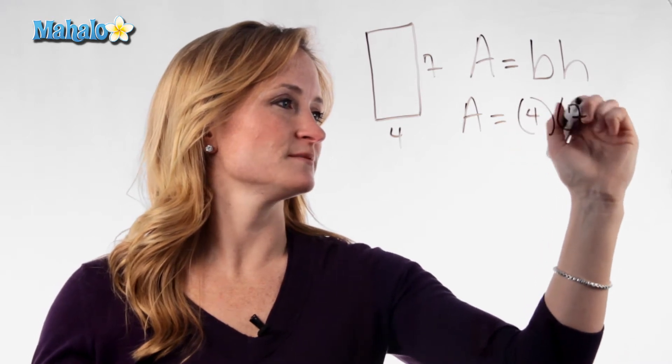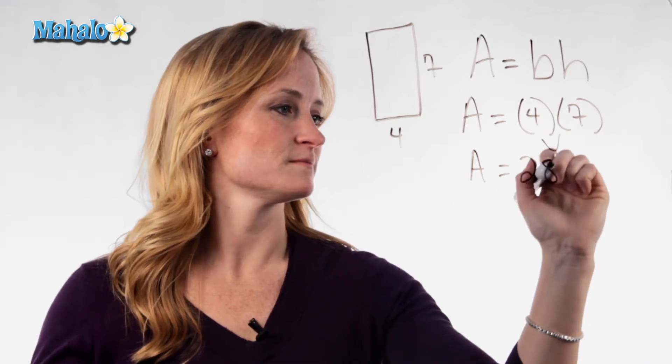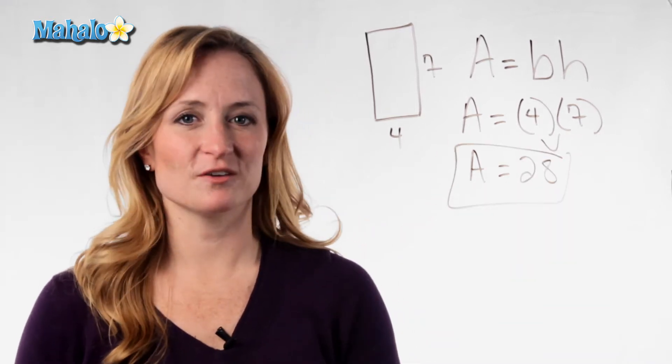4 times 7. So this rectangle would have an area of 4 times 7 is 28. That's how you find area of a rectangle.